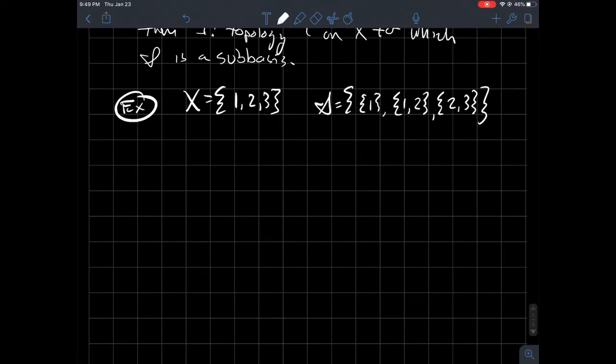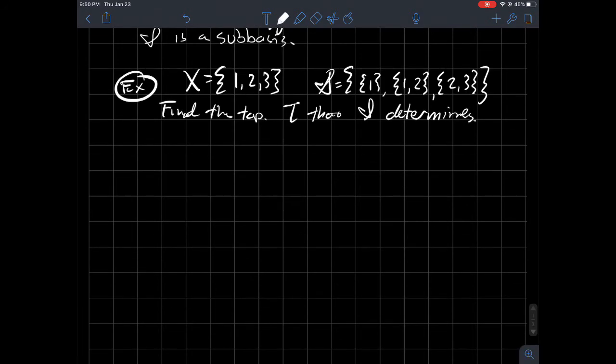All right. So I just kind of randomly picked this. This is just a bunch of random subsets of X here. And what I'm saying is I'm going to tell you that this stuff is a subbasis for some topology. So find the topology T that this collection S determines. So that's my S up there.